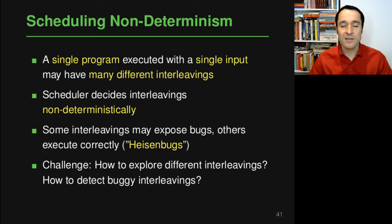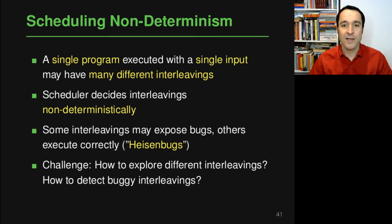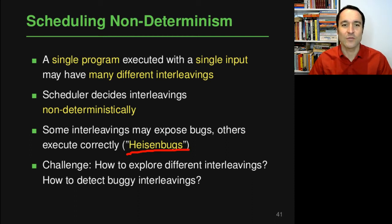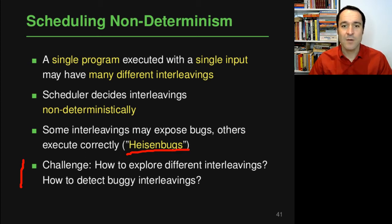In practice there's some scheduler that decides these interleavings non-deterministically, which means if you execute a program multiple times you will get different interleavings. Many concurrency bugs have the nasty property that only some interleavings actually expose the bug and others execute correctly, which has given these bugs the nickname Heisenbugs, because they kind of disappear when you try to look for them. The challenge is how to explore different interleavings in a systematic way and how to detect buggy interleavings.